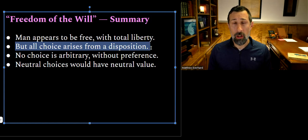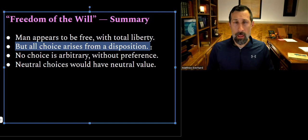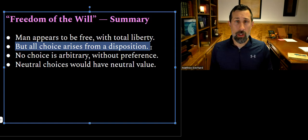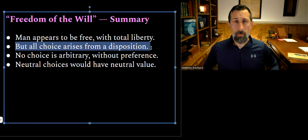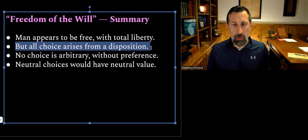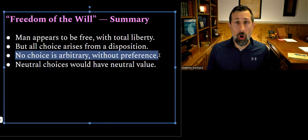For instance — and this is my example, not Edwards' — if you had a choice between taking the short road home, which is quick and straight, versus the long road, which is winding and scenic, you're not going to choose arbitrarily as though there's no disposition within you that prefers one or the other. You always choose based on something that resides within you. So while you are the one making the choice, there is always a reason why you make the choice that you do.